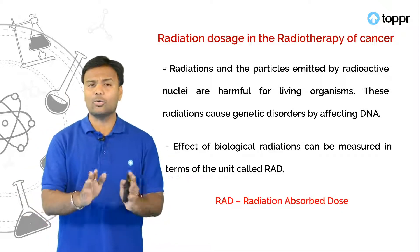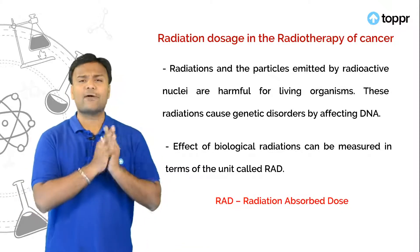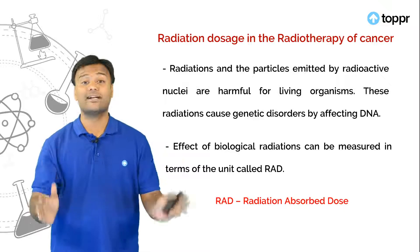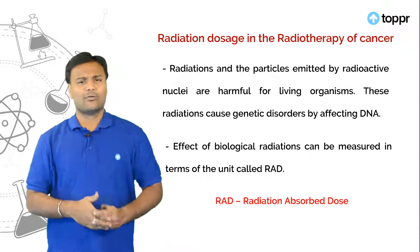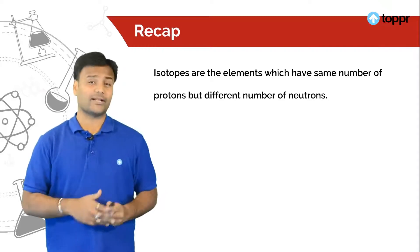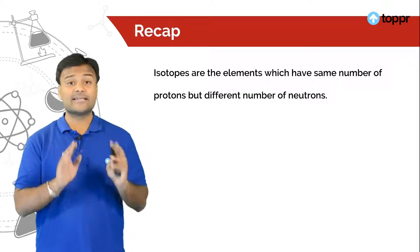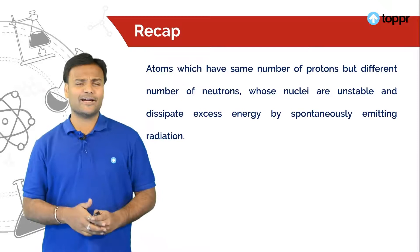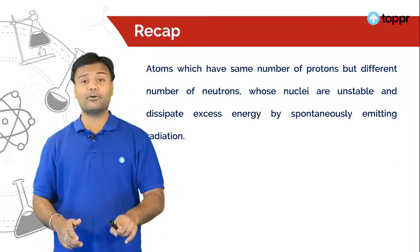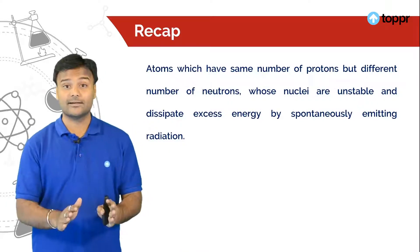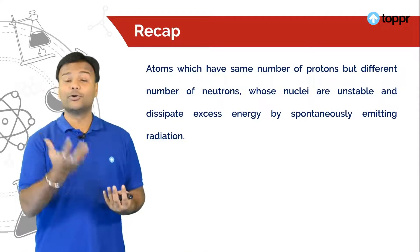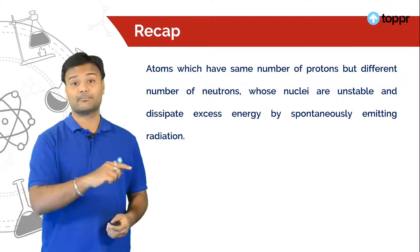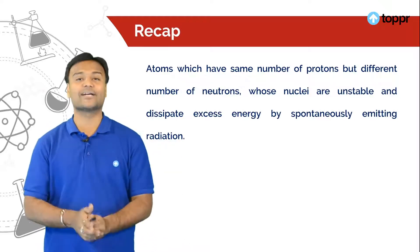So I can conclude saying that radioactive isotopes have several uses. But prolonged exposure to these radiations leads to genetic disorders. So guys what we have studied so far we have seen isotopes which means the elements which have similar number of protons but difference in the number of neutrons. So radioactive isotopes these are nothing but which have same number of protons difference in the number of neutrons. But these nuclei are unstable due to presence of excess of energy. And this excess energy is released in the form of radiation.